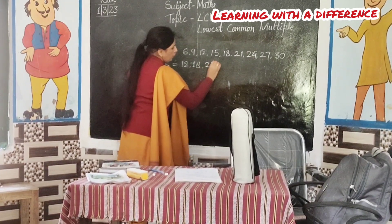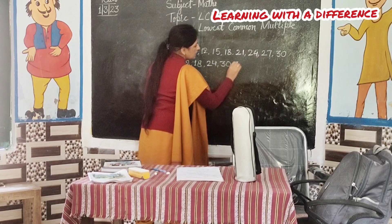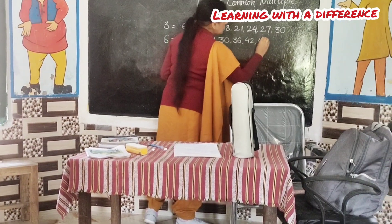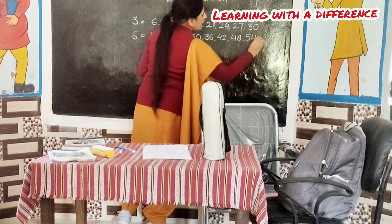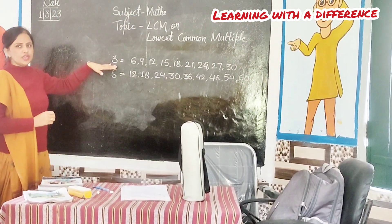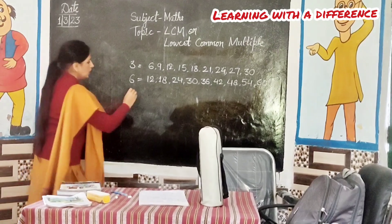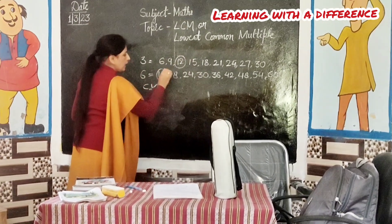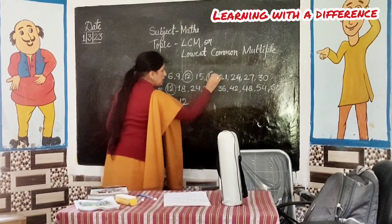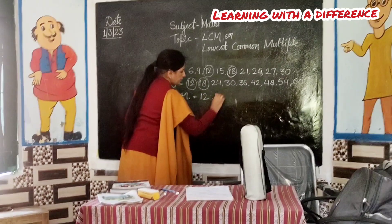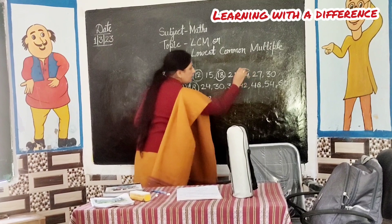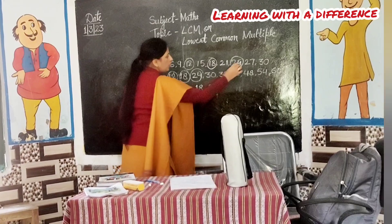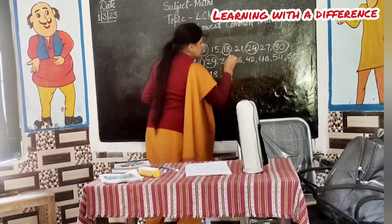3 times 6 is 18. Yes. 3, 6, 7 — 40, 48, 49. Four, and ten — sixty. So, these are the common multiples. Common multiples are 12, 18, 24. Twelve. Eighteen. Twenty-four. Very good. Twenty-four.